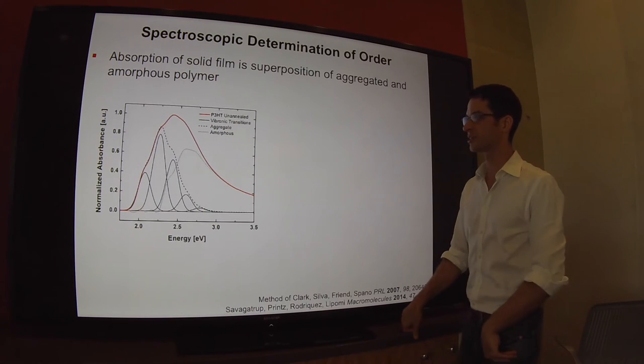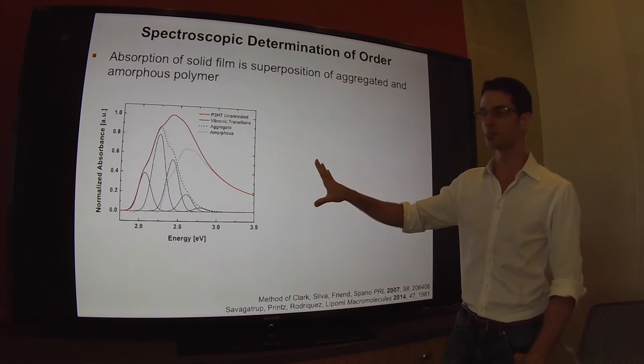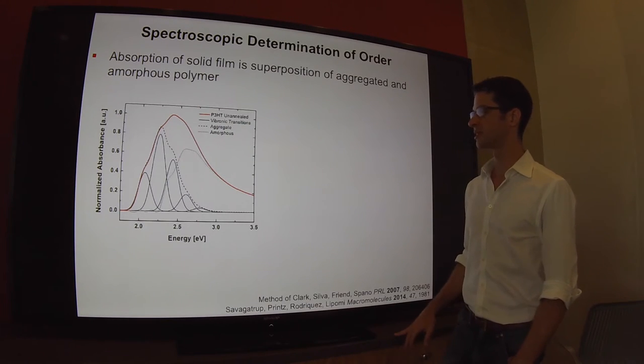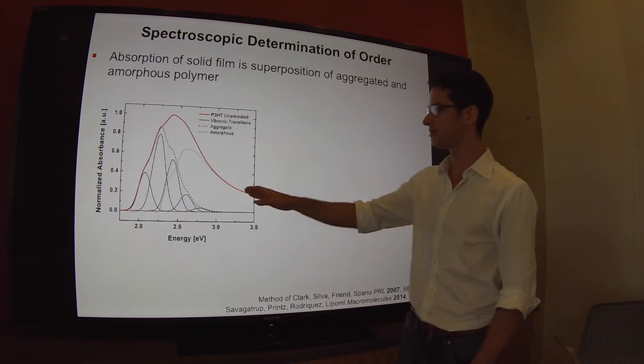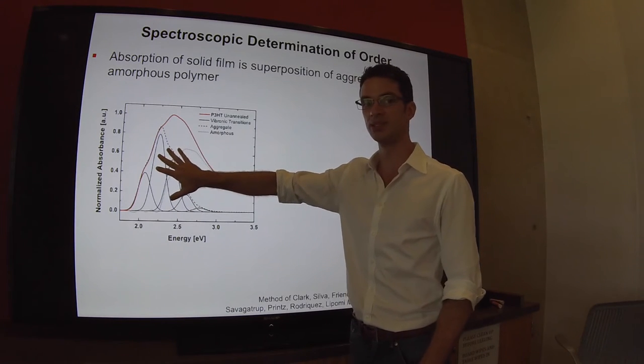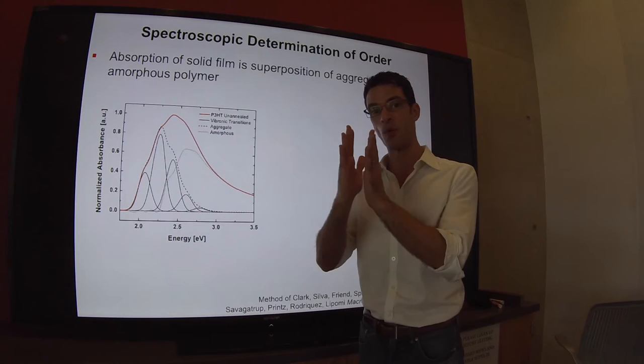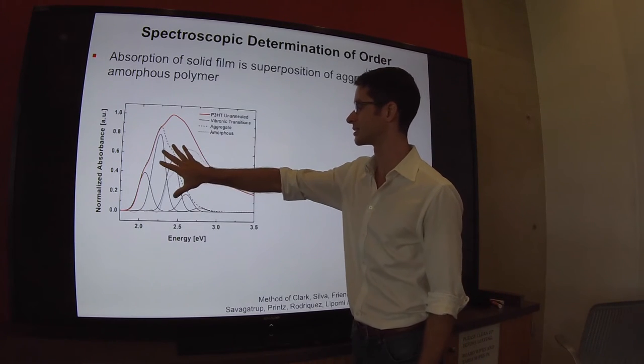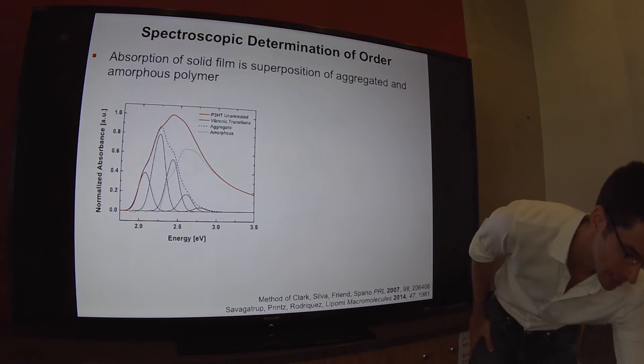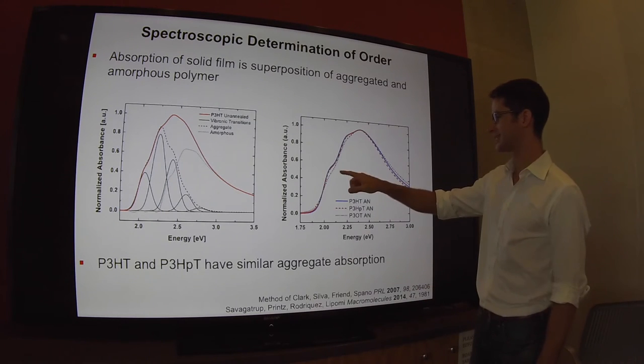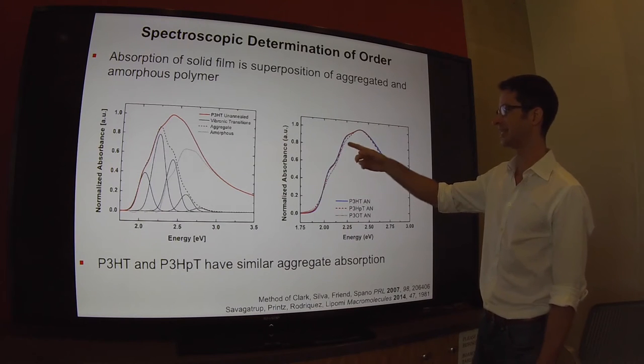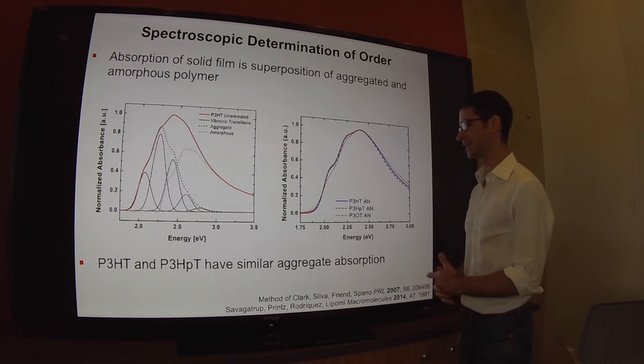To rationalize the charge transport properties, we can look at the UV-vis spectrum as a function of side chain length. Frank Spano at Temple University and others have shown that the UV-vis spectrum can be deconvoluted into contributions from vibronic peaks due to H-aggregates—those are ordered pi-stacked aggregates in the solid material—and its amorphous regions. C6 and C7 have almost identical aggregate behavior, and C8 is significantly worse than that given the same thermal treatments.